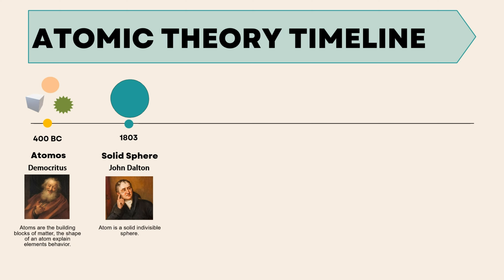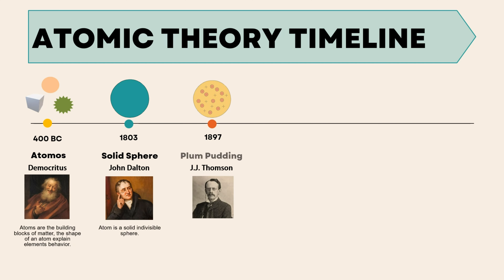Moving forward to 1897, J.J. Thomson presented a plum pudding model, suggesting that negative electrons are embedded in a sea of positive charges.